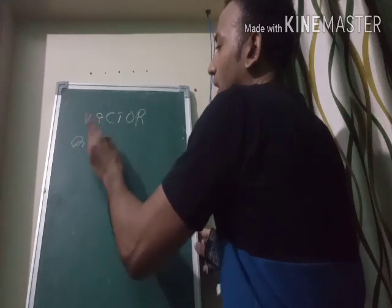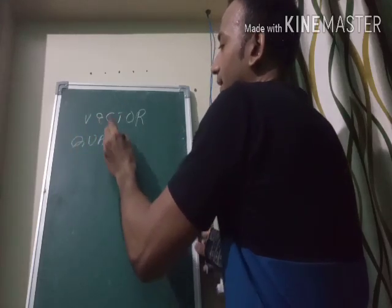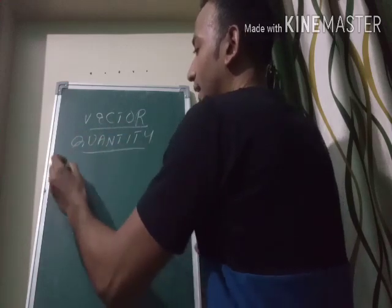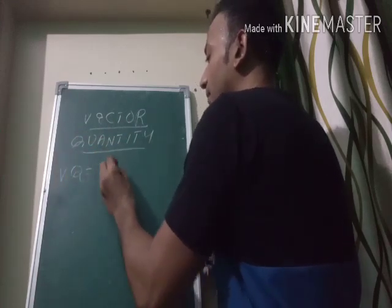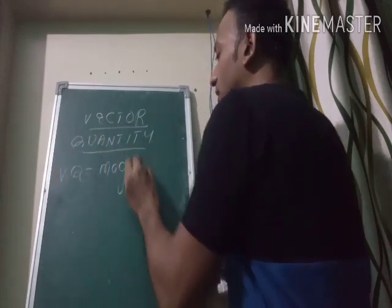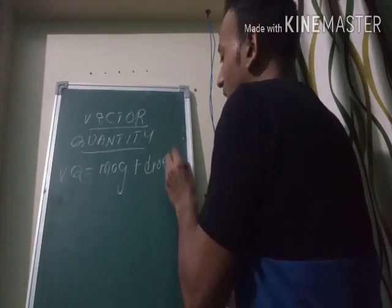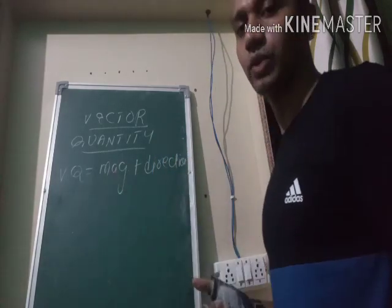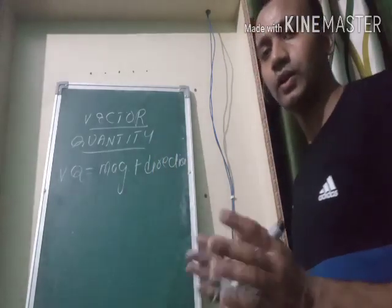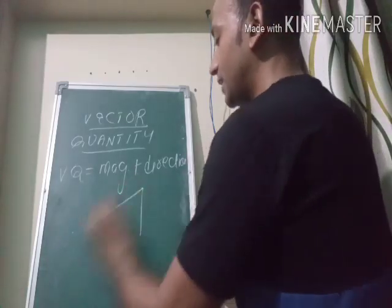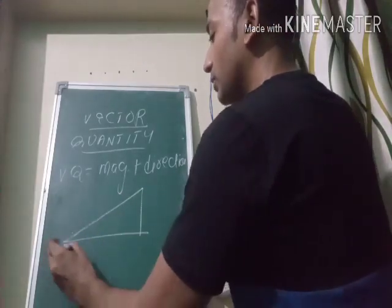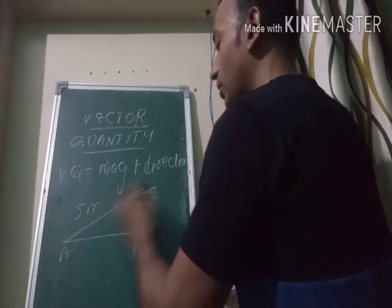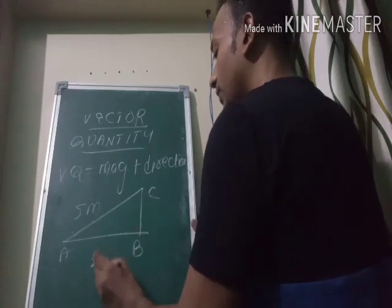Vector quantity is essentially scalar plus direction. When we add magnitude plus direction, a quantity which depends on both magnitude and direction is called a vector quantity. For example, suppose I tell you to follow the shortest path from A to C.